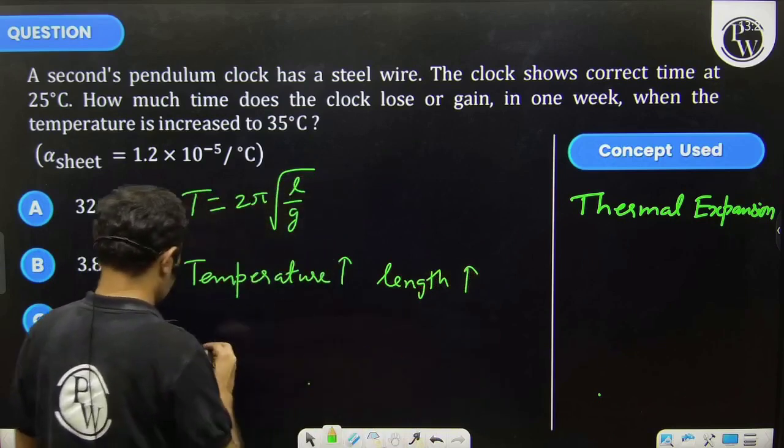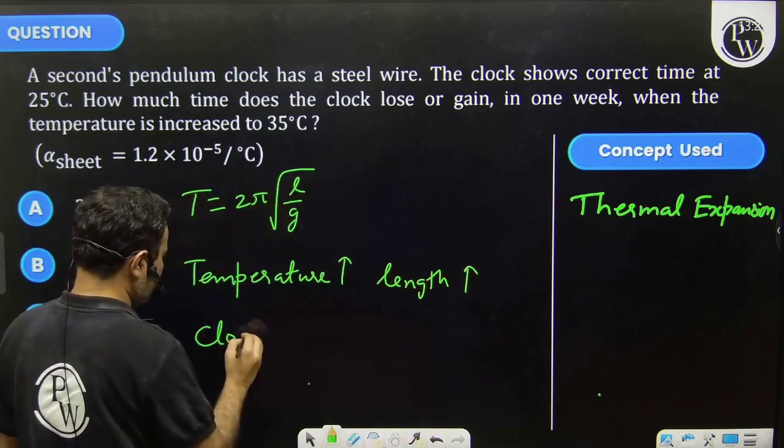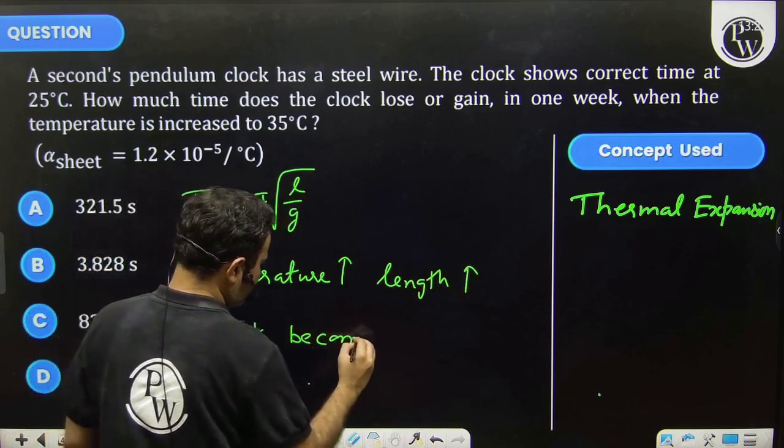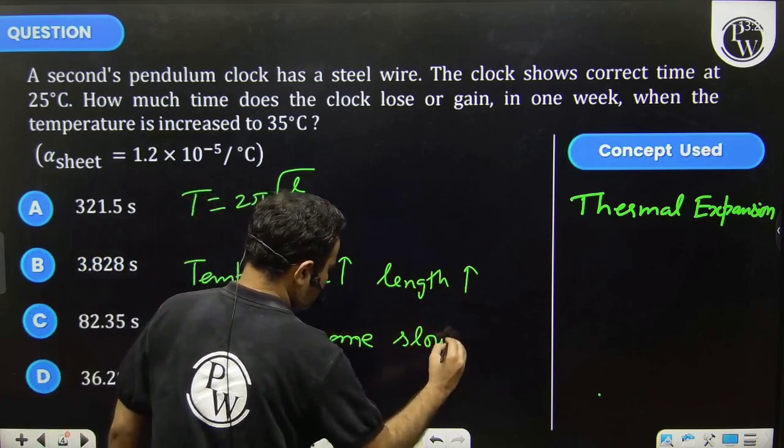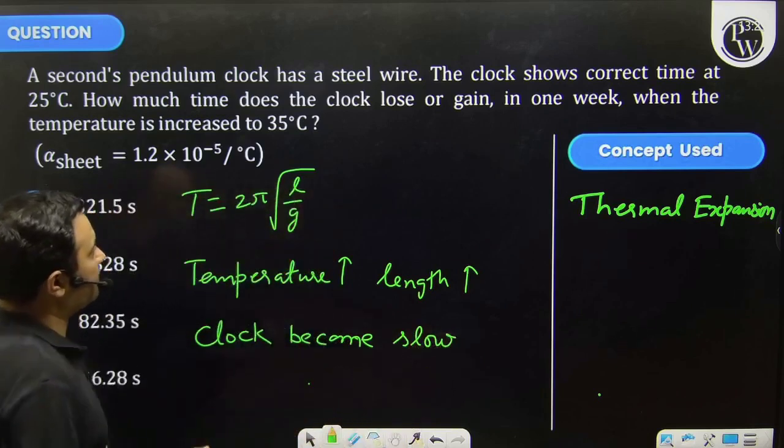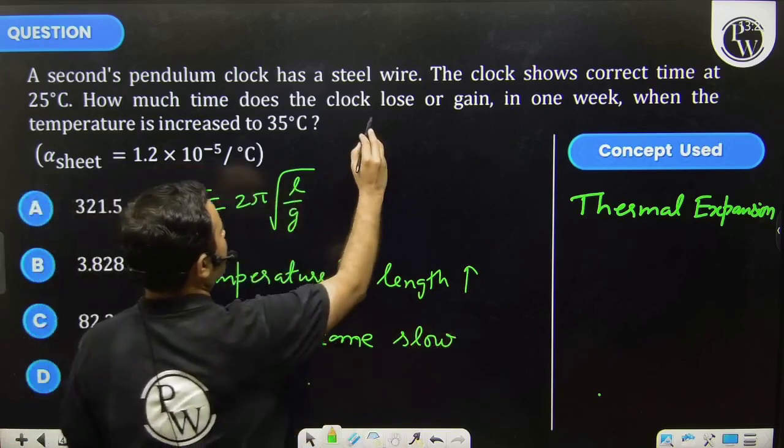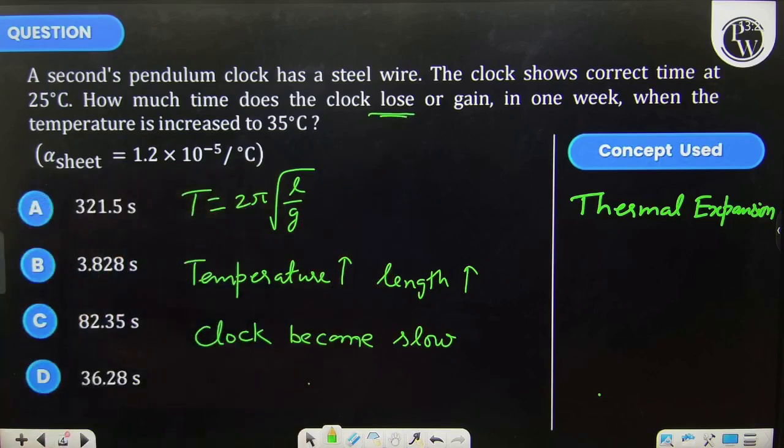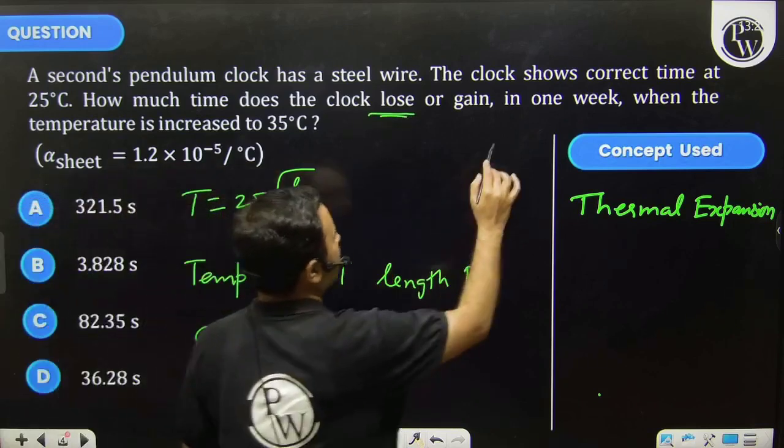Clock becomes slow, so it will lose time. We have to calculate how much time it will lose in one week.